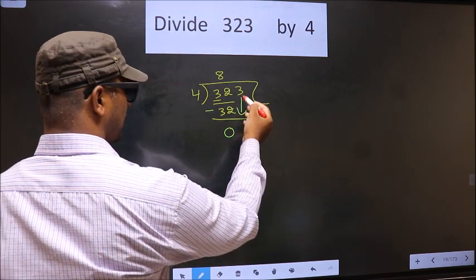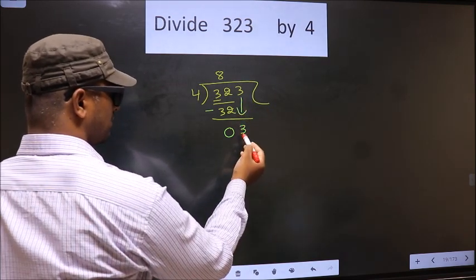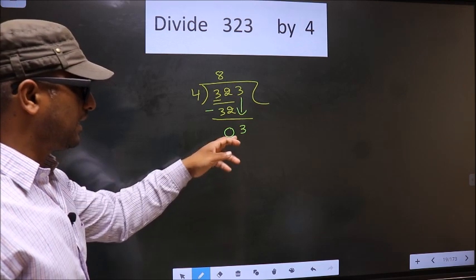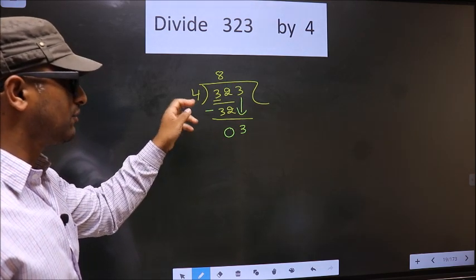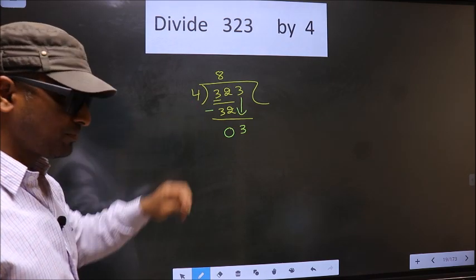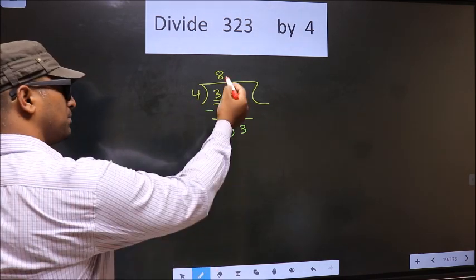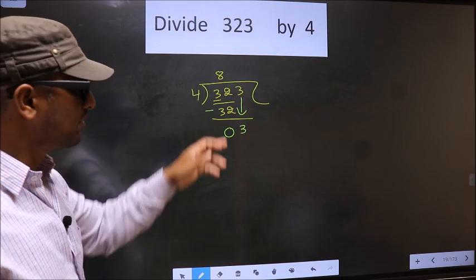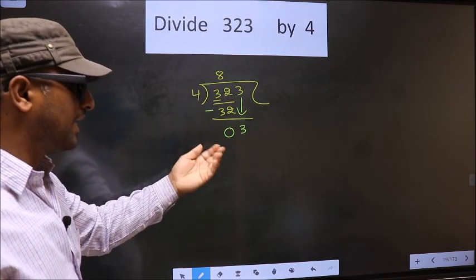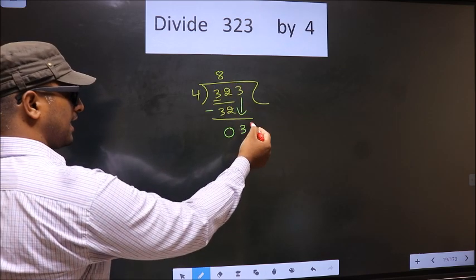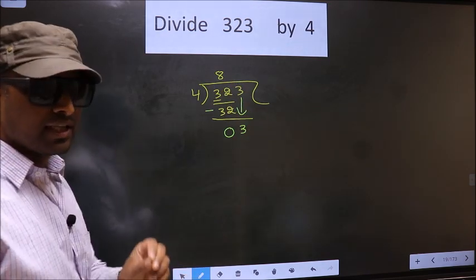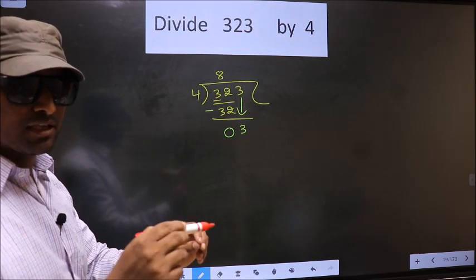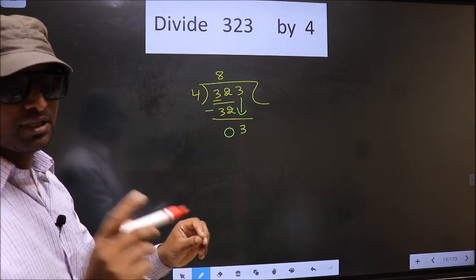Now we bring down the beside number 3. This is where the mistake happens. Here we have 3, and here 4. 3 is smaller than 4. So what many do is they put a dot and take 0 here — which is wrong. Just now you brought the number down, and in the same step you want to put a dot and take 0, which you are not supposed to do.